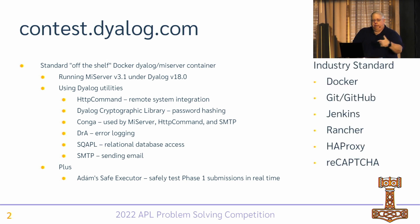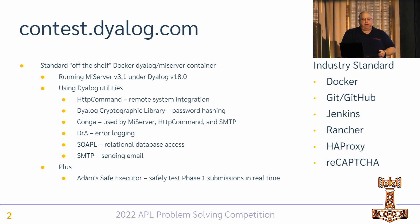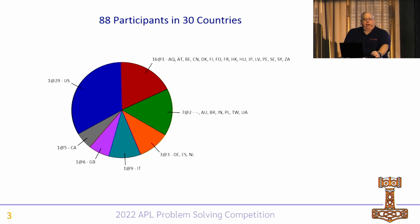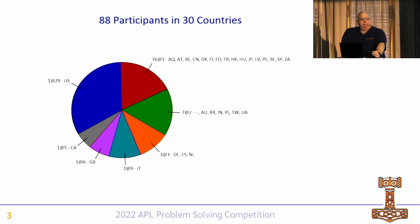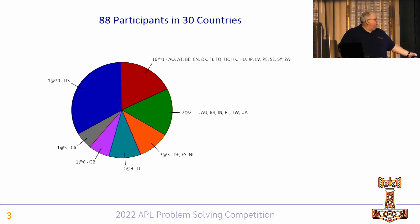We're also using some industry standard tools — Docker, Git, Jenkins, and so on. This year we had 88 participants, meaning at least 88 people submitted correct submissions. We probably had a couple of hundred registrants; not everybody submitted anything. This year we had 29 folks from the US, 16 countries had one representative each, Italy had nine, the UK had six, and Canada had five.